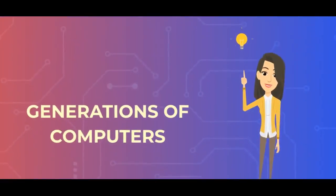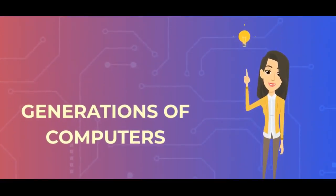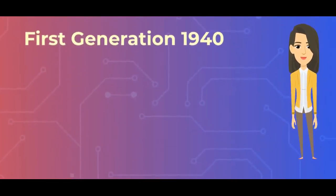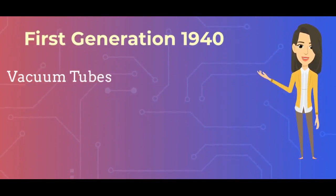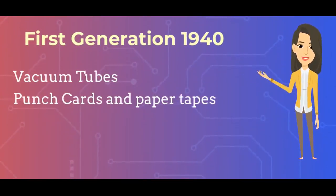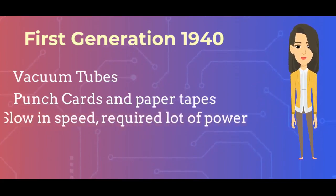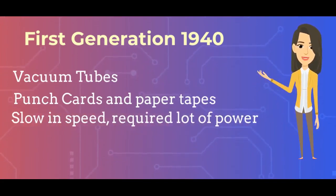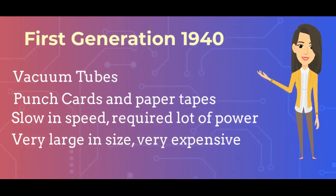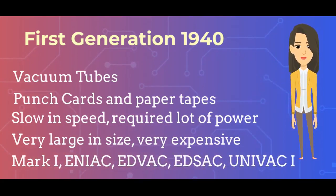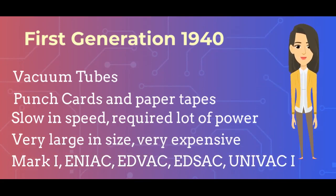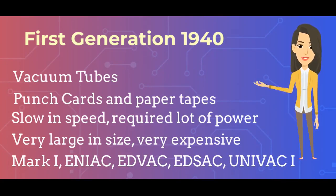Generations of Computers. First Generation Computers, 1940: They used vacuum tubes. Input was given by punched cards and paper tapes. They were slow in speed, required a lot of power, were very large in size, and very expensive. Some first generation computers are Mark I, ENIAC, EDVAC, EDSAC, and UNIVAC I.